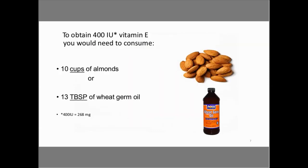Here's an interesting thing: to obtain 400 international units of vitamin E, you would need to consume 10 cups of almonds, or 13 tablespoons of wheat germ oil. Obviously, no one would be eating 10 cups of almonds a day — I don't think we could handle that digestively or calorically. Same with wheat germ oil.